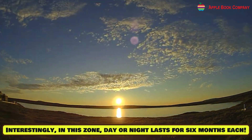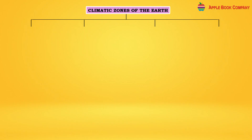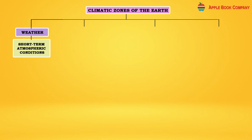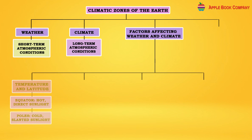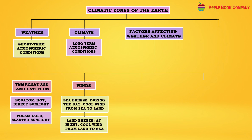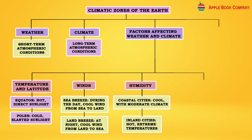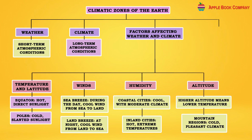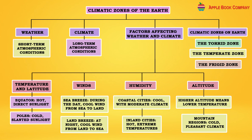Mind Map — Climatic Zones of the Earth. Weather: short-term atmospheric conditions. Climate: long-term atmospheric conditions. Factors: temperature and latitude (equator hot with direct sunlight, poles cold with slanted sunlight), winds (sea breeze during the day from sea to land, land breeze at night from land to sea), humidity (coastal cities cool with moderate climate, inland cities hot with extreme temperatures), altitude (higher altitude means lower temperature, mountain regions cold and pleasant). Climate zones: Torrid, Temperate, and Frigid.